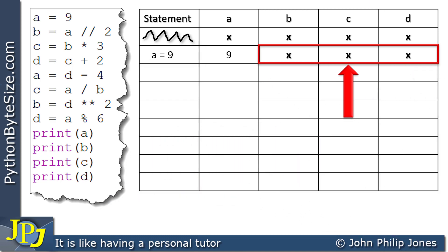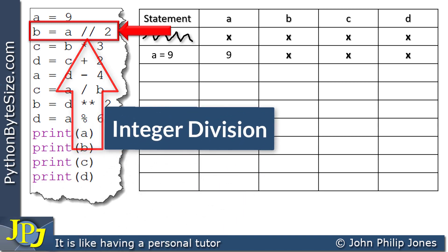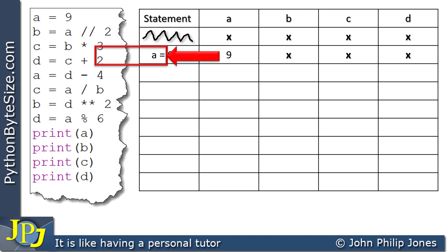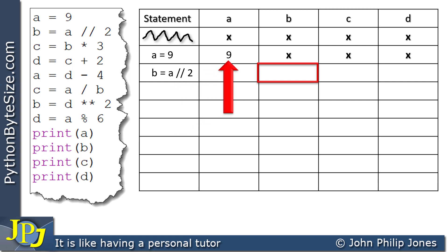We now move on to the next program statement. Between the A and the 2, you can see there are two forward slashes. They are telling me this arithmetic operator is what is often referred to as integer division. We need to ask ourselves: what is integer division as opposed to a normal division? Let's consider it for this program statement. I copy the statement down first and then we're affecting B.